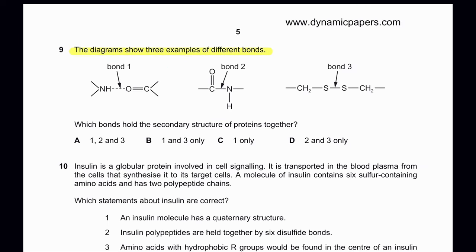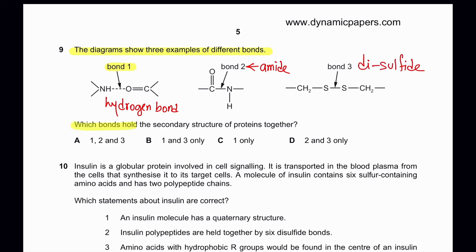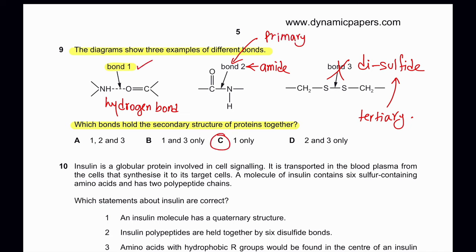Question 9: The diagram shows three examples of different bonds. Bond 1 is a hydrogen bond, bond 2 is an amide bond, and bond 3 is a disulfide bond. Which bonds hold the secondary structure of proteins together? Bond 3 is wrong because it's involved in tertiary structure. Bond 2 is wrong because it's involved in primary structure (peptide bonds). Only bond 1 is correct. So C will be the answer, as C has only bond 1.